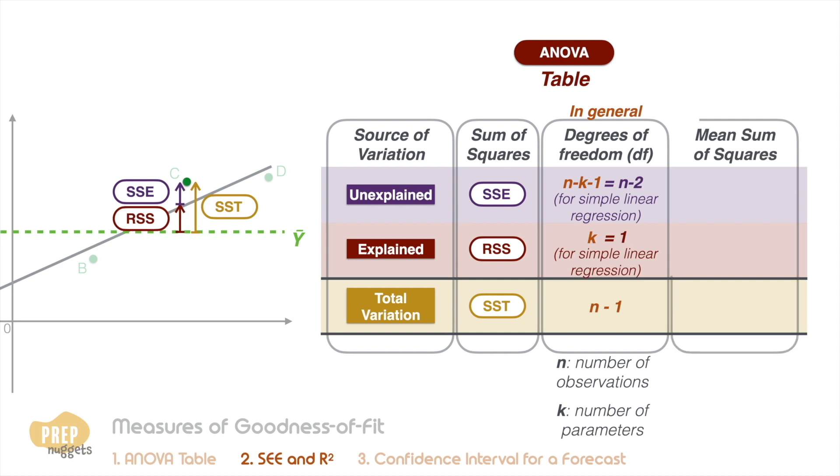To calculate the mean of the sum of squares, we divide the sum of squares by the degrees of freedom. So the mean of the regression sum of squares, MSR, is the RSS divided by k.